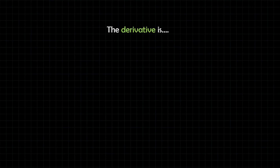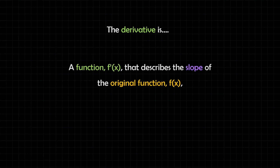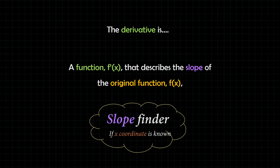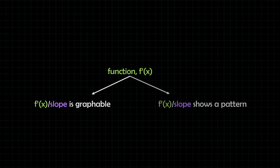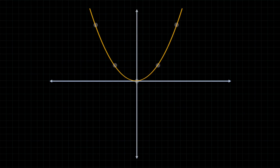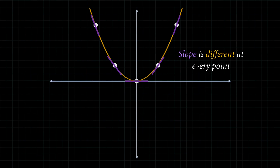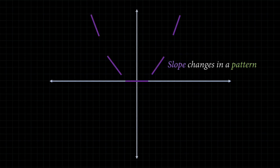So now we can define the derivative. The derivative is a function, f prime of x, that describes the slope of the original function. If we know the x coordinate, we can plug it in and it gives us the slope at that particular point — we can think of it as a slope finder, as long as we have the x coordinate. Notice the word we use to describe the derivative: a function. If the derivative is a function, it must be both graphable and represent a pattern.